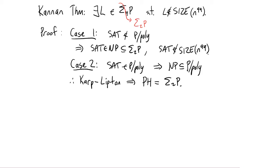And in that case, in particular, if the whole hierarchy collapses to sigma 2P, that certainly implies that sigma 4, the fourth level, also collapses to sigma 2P.